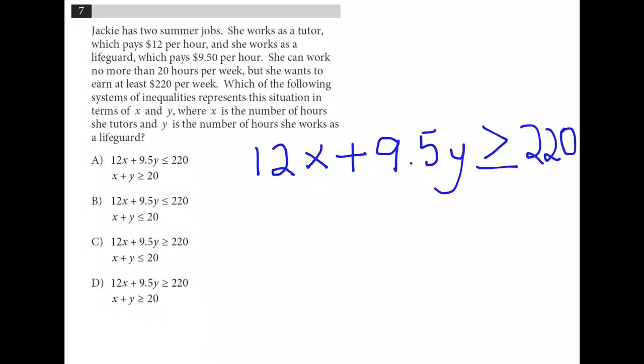On the other hand, the number of hours she works per week is going to be x plus y, and it's supposed to be no more than 20, so 20 at the largest possible, but also could be less than. We see choice C has the correct facing inequalities.